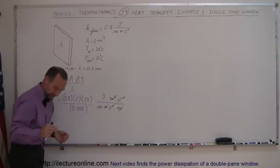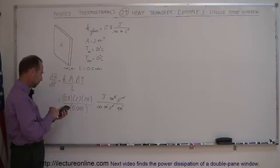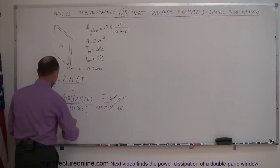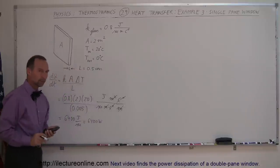With my calculator, we'll find out how much that is. 0.8 times 2 times 20 divided by 0.005 equals 6400 joules per second, which is 6400 watts—an enormous amount of energy.